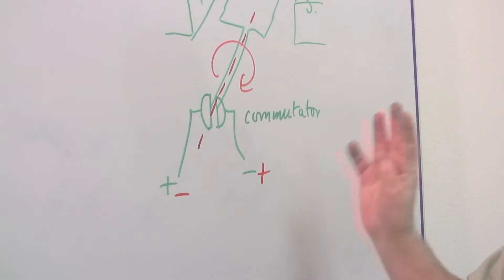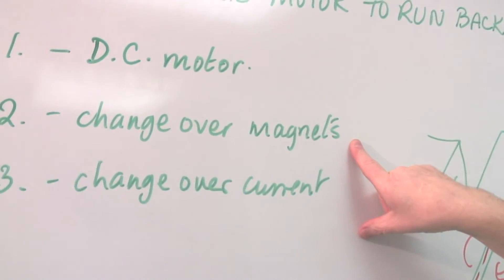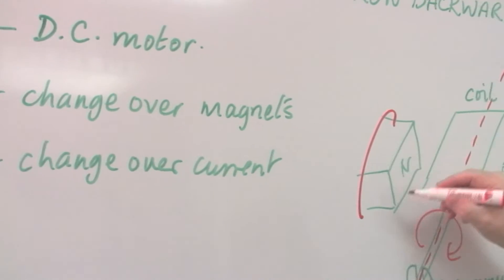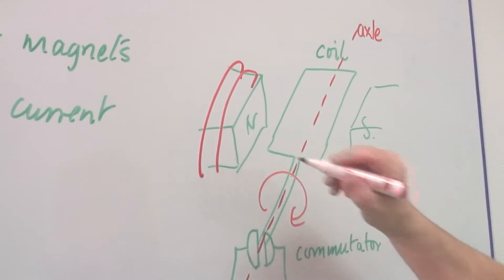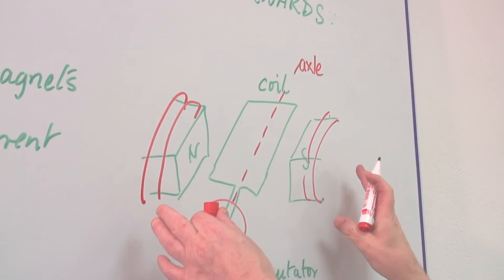So in a direct current DC motor, I can either change over the magnets and these could be electromagnets, of course these also could be electromagnets. So these could have coils to make them into electromagnets,